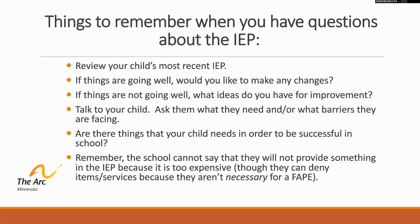Things to remember when you have questions about the IEP: review your child's most recent IEP. If things are going well, would you like to make any changes to the plan? If things are not going well, what ideas do you have for improvement to bring to the administration team, the school, or teachers? Talk to your child — ask them what they need, what barriers they are facing, what is working or not working for them. Are there things your child needs to be successful in school that they currently don't have in their IEP plan? Remember, schools cannot say they will not provide something in the IEP just because it's too expensive or out of budget, though they can deny items if they are not necessary for FAPE.